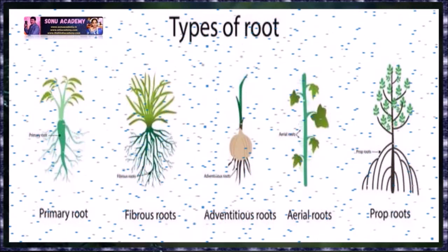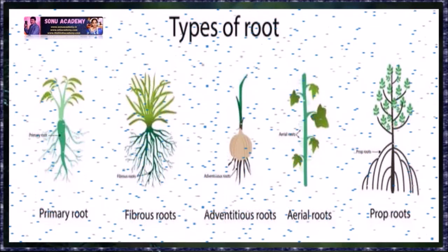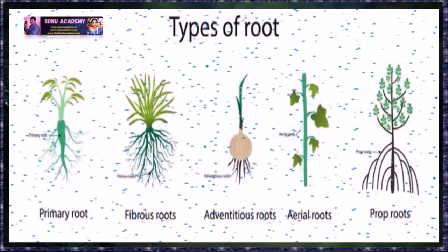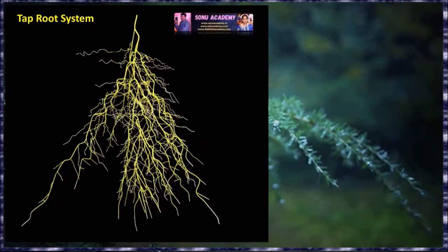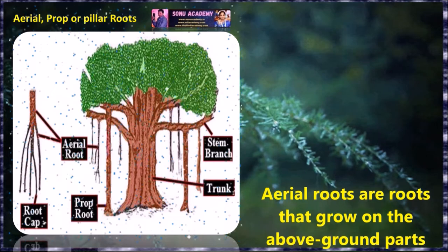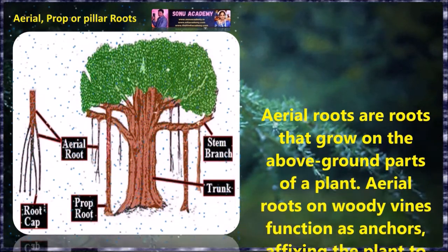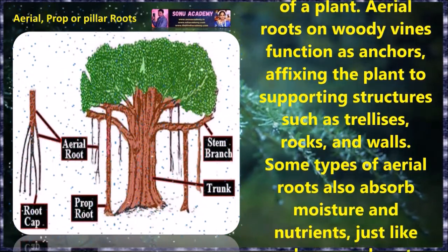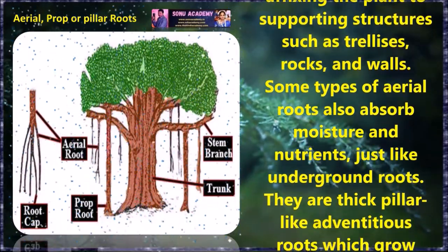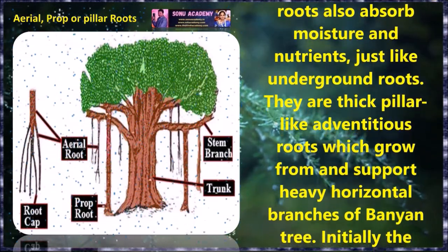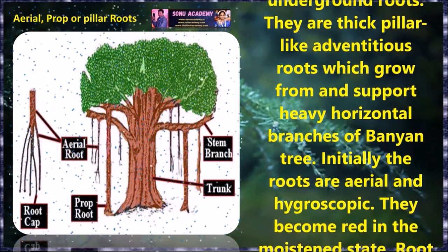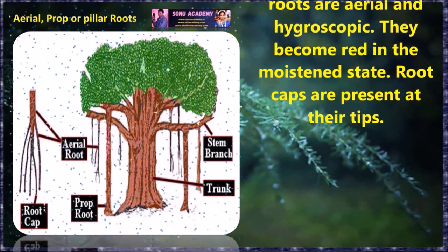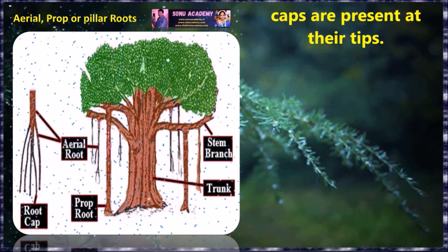Now let us discuss about modification of roots. Modification means changes in shape, form or structure of any organ to carry out special functions other than, or in addition to, the normal function. Modifications of roots are found in both tap root and adventitious root systems. Aerial roots are roots that grow above the ground of the plant. Aerial roots on woody vines function as anchors, fixing the plant to support structures such as trellises, rocks and walls. Some types of aerial roots also absorb moisture and nutrients just like underground roots. They are thick pillar-like adventitious roots which grow from and support heavy horizontal branches of the banyan tree. Initially the roots are aerial and hygroscopic; they become hard in the moistened state. Root caps are present at their tips.